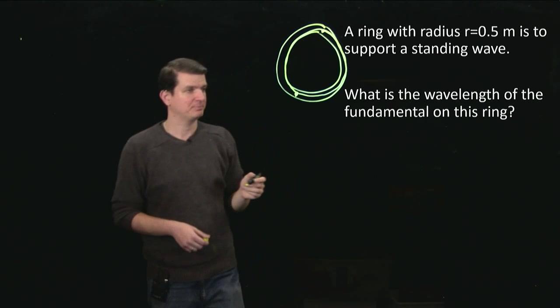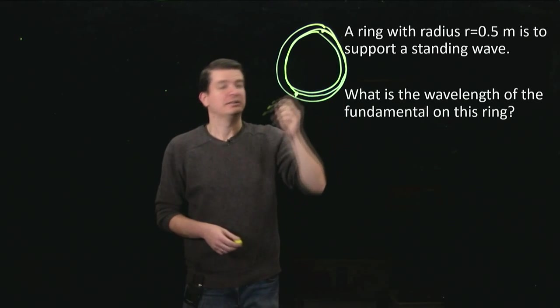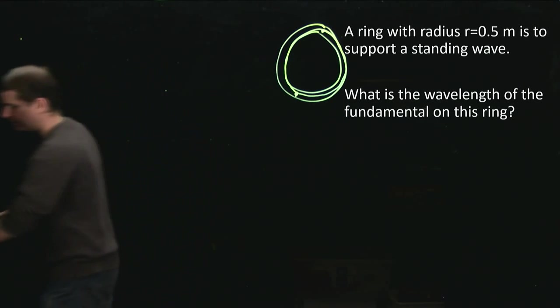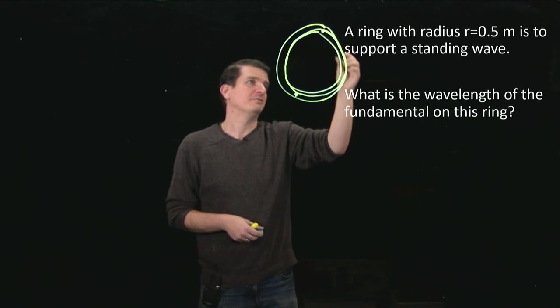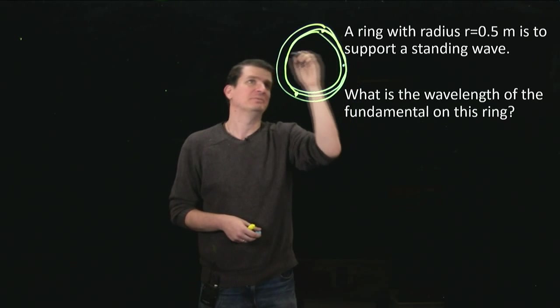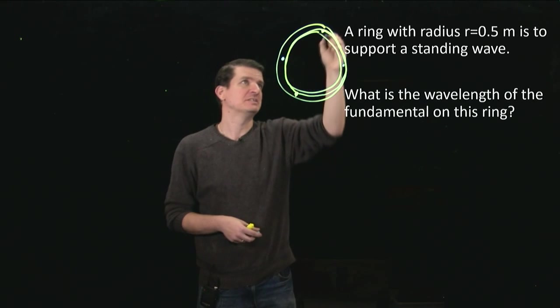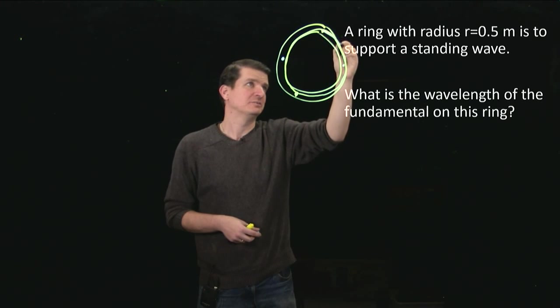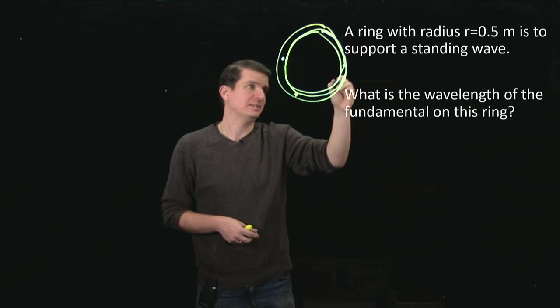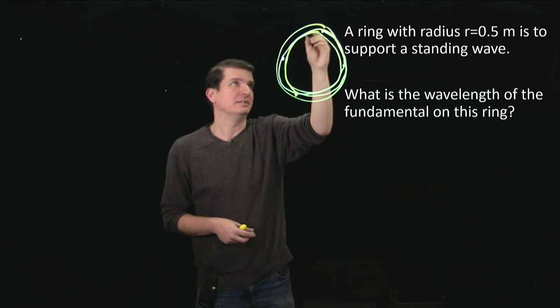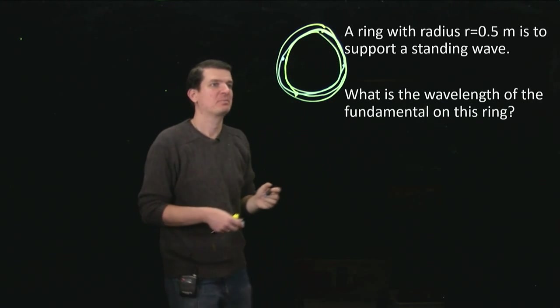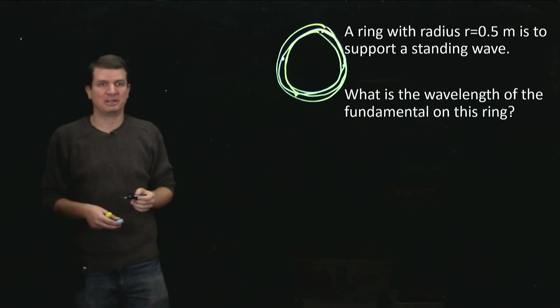So that would be a standing wave in this ring. Now I can do another one. If I just double up on my reference points, so I can go out and through the center, in, through the center, out, through the center, in, through the center. So that would be a standing wave too.